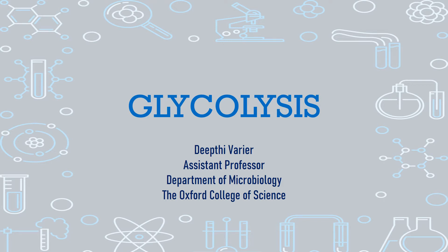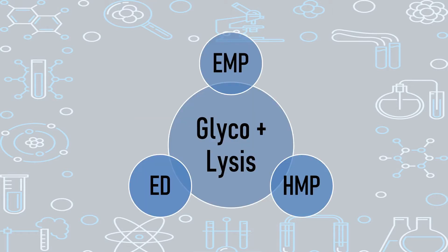Hello all. In today's video lecture on physiology, we will be looking at one of the most important energy-yielding pathways of any biological system, that is glycolysis. When we say the term glycolysis, it can be essentially broken down into two subterms: glyco and lysis. Glyco is anything related to glucose or a carbohydrate, and lysis is the breakdown. So glycolysis is the breakdown of glucose to yield energy — that is why it is called an energy-yielding pathway.